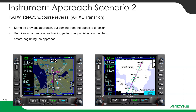We flew the RNAV-3 and then we flew the MIST. We are sitting in the hold after that MIST approach — we're holding at SIGI. So now what we want to do is reload the approach and fly the course reversal to get back and reshoot this RNAV approach after the MIST. Let's set that up.